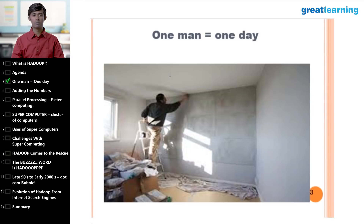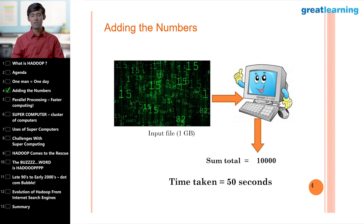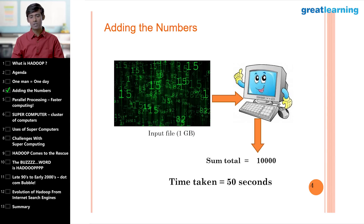So is the case with many problem-solving scenarios in computer science. Assume we have a dataset — numbers in a CSV file of 1 GB — and a PC with software that scans all numbers one by one and adds them up. For the sake of discussion, this operation on a single system takes 50 seconds to produce a sum, say 10,000.